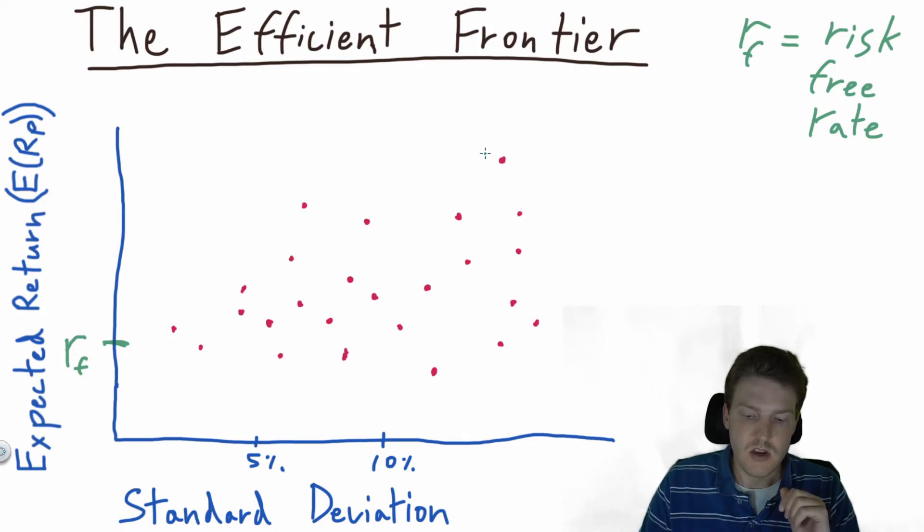The efficient frontier essentially plots the highest possible combinations that you could get from these portfolios.